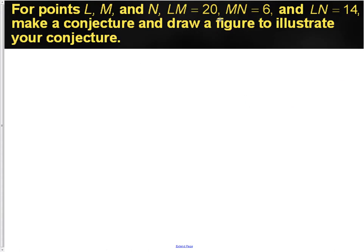Now, we have an example. It says for points L, M, and N, LM is 20, MN is 6, and LN is 14. Make a conjecture and draw a figure to illustrate your conjecture. You might actually need to draw your figure first before you can make your conjecture. Make sure to pause the video as you are doing this.